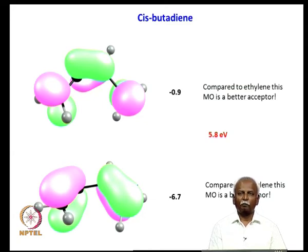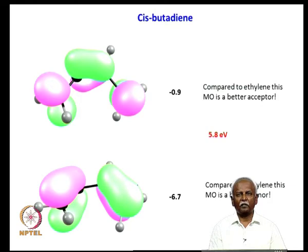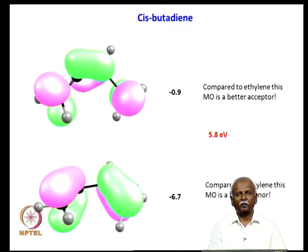This leads to much better bonding — not just the chelate effect of having two double bonds interacting with the same metal, but also genuinely better donor and acceptor capacity. This turns out to be a key factor in the study of butadiene and polyene metal complexes.